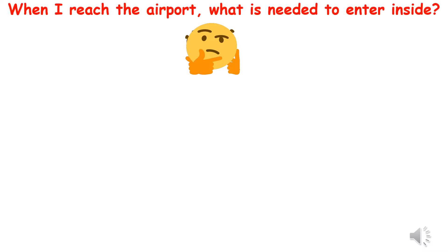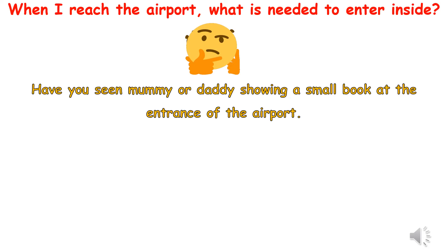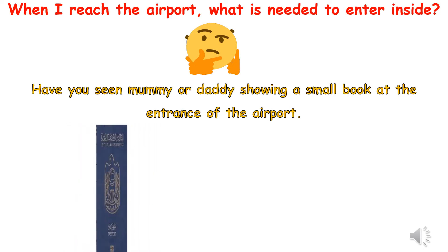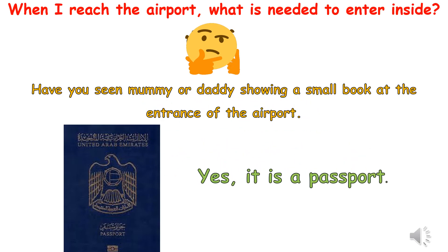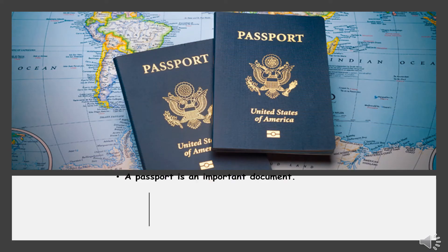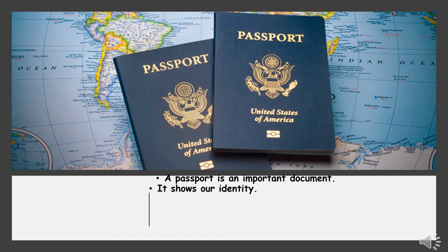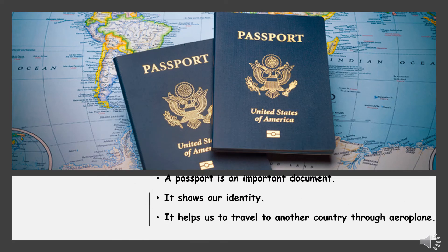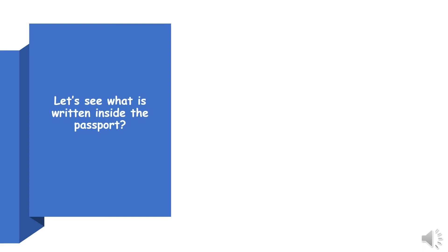When I reach the airport, what is needed to enter inside? Have you seen mummy or daddy showing a small book at the entrance of the airport? Yes, it is a passport. A passport is an important document. It shows our identity. It helps us to travel to another country through aeroplane. It shows our nationality. Let's see what is written inside the passport.